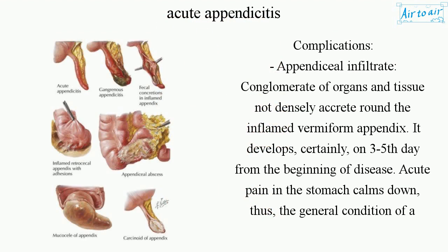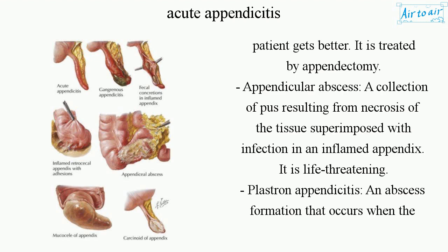Complications. Appendiceal infiltrate is a conglomerate of organs and tissue densely accreted around the inflamed vermiform appendix. It develops typically on the 3rd to 5th day from the beginning of the disease. Acute pain in the stomach calms down, and the general condition of the patient improves. It is treated by appendectomy. Appendicular abscess is a collection of pus resulting from necrosis of the tissue superimposed with infection in an inflamed appendix.